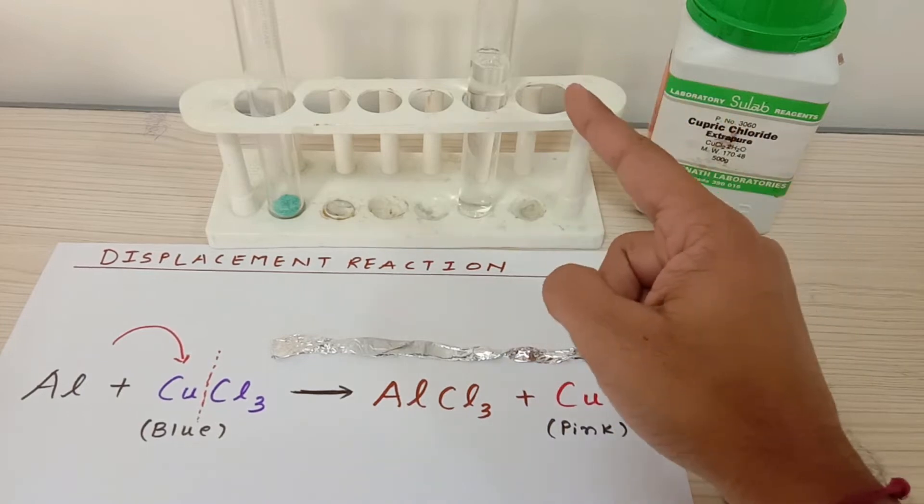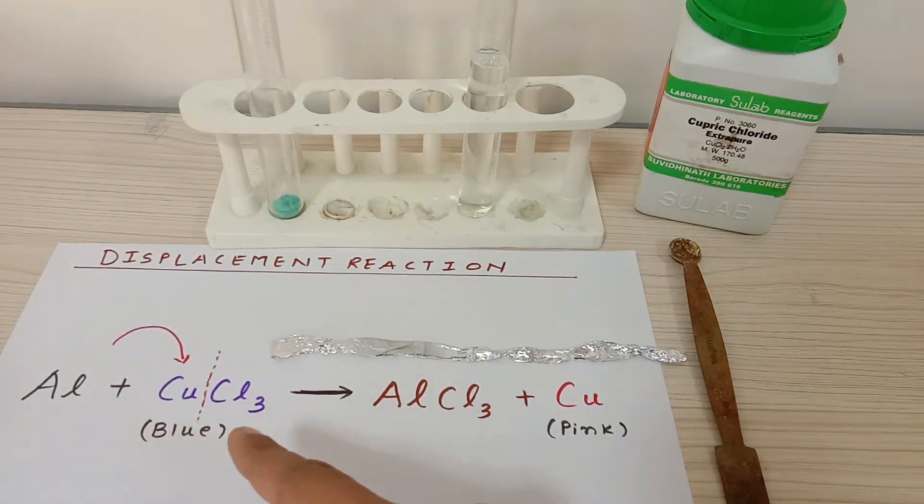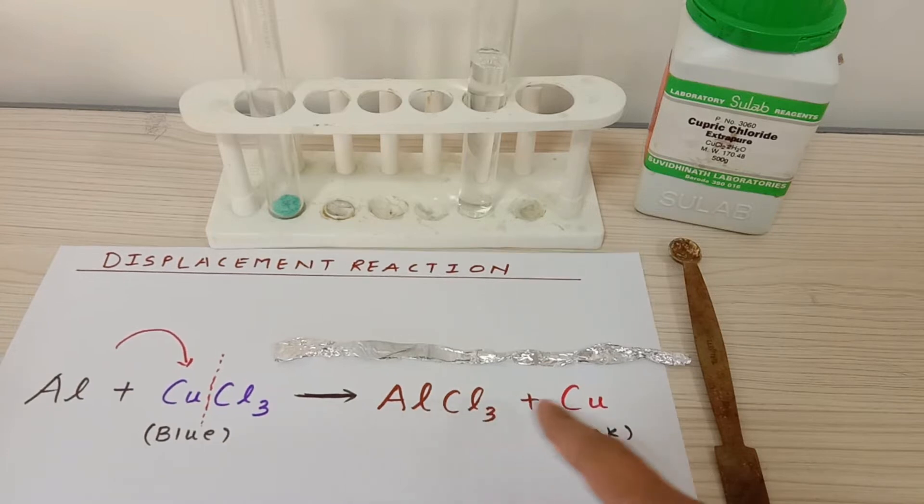Basically what I'm going to do is prepare a solution of cupric chloride and then immerse this aluminum strip inside it. Aluminum being more reactive than copper, aluminum is going to displace the copper. These two things are going to be formed: aluminum chloride and copper. Copper is dark pink in color and is going to gather on the aluminum strip.